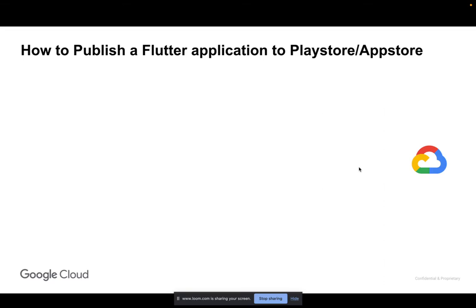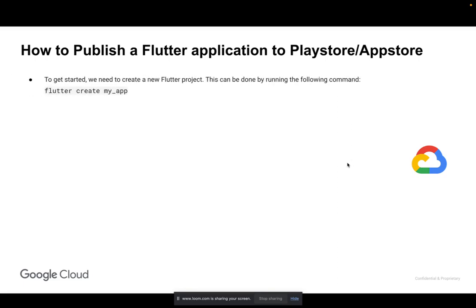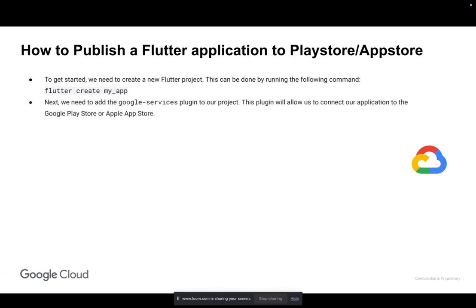In this video we'll discuss how to publish a Flutter application to the Play Store or App Store. To get started, we need to create a Flutter project. This can be done by running the following command: flutter create my_app. This command will create a new Flutter project called my_app.